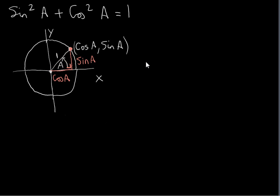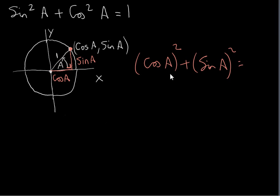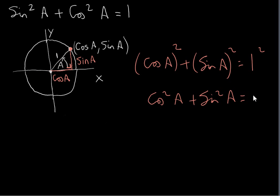It's just a simple application of Pythagoras. The sum of the squares of the two short sides — that's cos A squared plus sin A squared — equals the longest side squared. Now cos A times cos A is written cos²A, sin A times sin A is written sin²A, and one squared is one. And it's not just true for an acute angle — it's true for any angle, because the coordinates of any point anywhere on the unit circle are defined to be cos A, sin A.